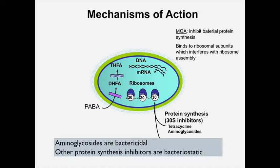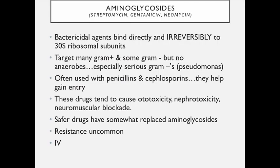You can see on the picture that the target of these protein synthesis inhibitors is the 30S subunit of the ribosome. Some aminoglycosides you might be familiar with are streptomycin, gentamicin, and neomycin. These agents bind directly and irreversibly to that 30S ribosomal subunit.